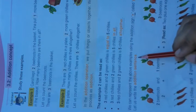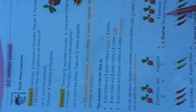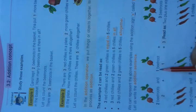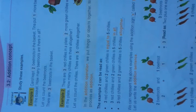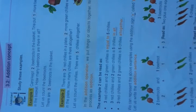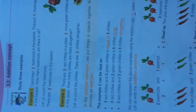We can represent the above examples using the addition sign. This is the addition sign, called plus. Let us write the addition sentences. 2 beetroots and 1 beetroot is equal to 3 beetroots — it is read as 2 plus 1 equals 3. This is the equal sign. 3 red chillies and 2 green chillies: it is read as 3 plus 2 is equal to 5. This is the equal sign and this is the plus sign.